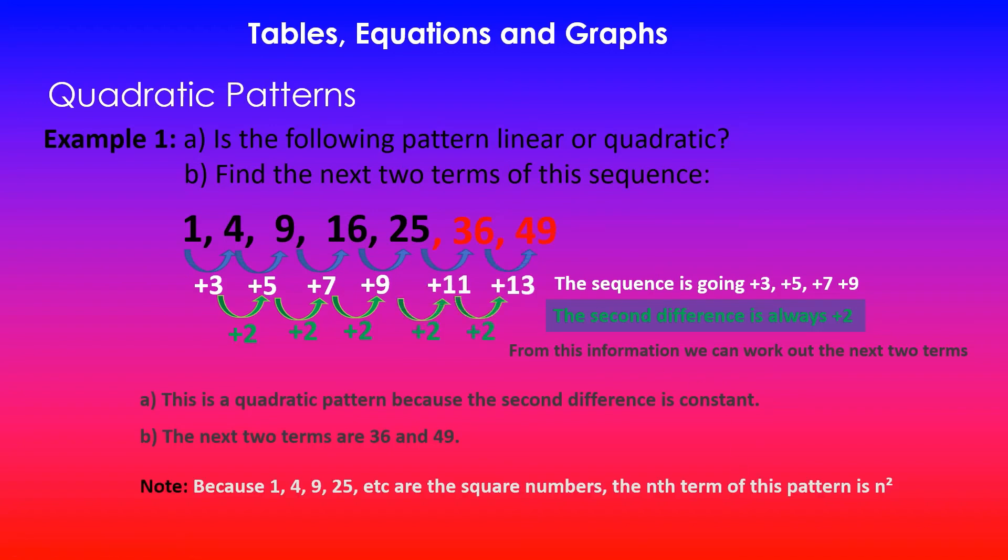Now in general, please do note that because the numbers 1, 4, 9, 25, etc. are the square numbers, the nth term of this pattern will be n². We will be using this information to derive the equations of quadratic patterns next. What I'm saying the nth term is n² because if you look at the first pattern, one squared is one, then two squared is four, then three squared is nine, four squared 16, and so forth. You can see that pattern is n², and I'm going to use this information to derive the equations of quadratic patterns next.